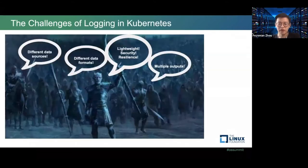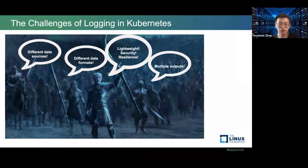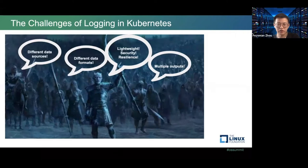You may know Game of Thrones — this is a screenshot from the show. The White Walkers tell us that we have a lot of challenges with logging in Kubernetes. We have multiple and different data sources, different data formats, and the White Walker King says we need lightweight, secure, and resilient solutions. We also face challenges of multiple outputs and destinations.